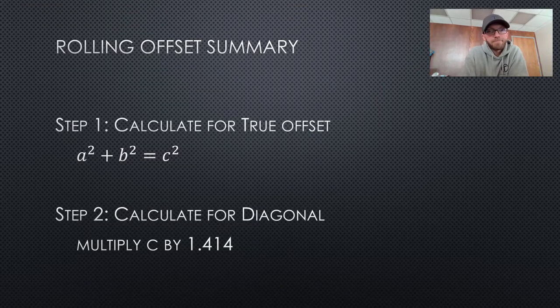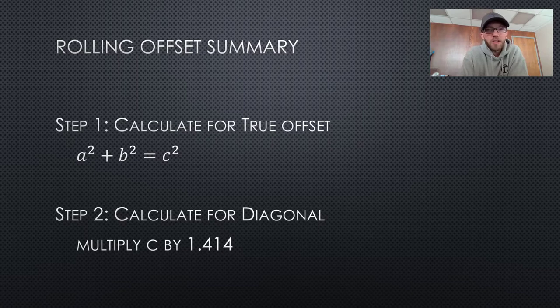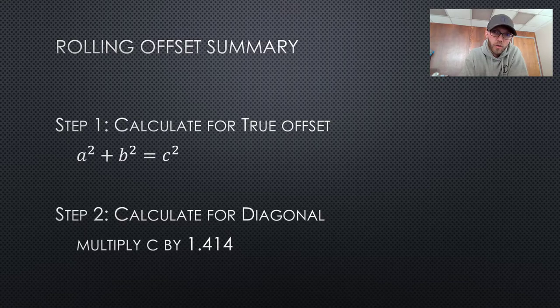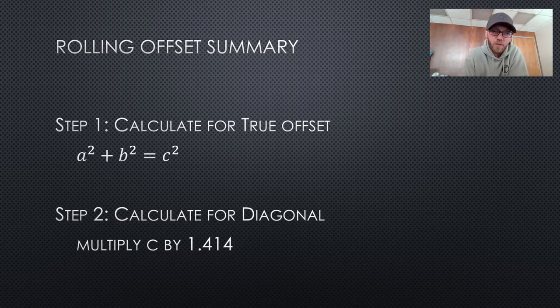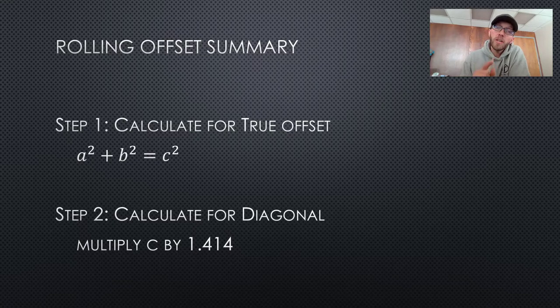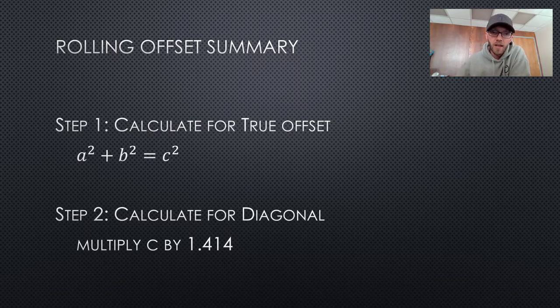Let's summarize. If all of this becomes very frustrating or complex to you, please boil it down to these two steps for a rolling offset. Just remember, you've got to find your two changes, the rise and the offset, and plug them into A squared plus B squared equals C squared. That's step one. And step two is to multiply that by 1.414. You can do this. You will succeed on your practical test and you will become a fantastic journeyman. Good luck.